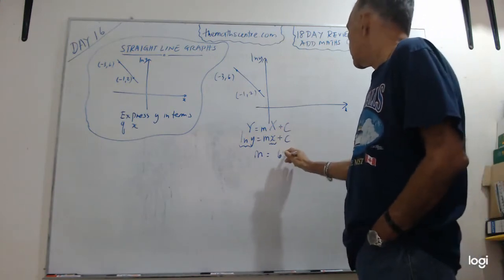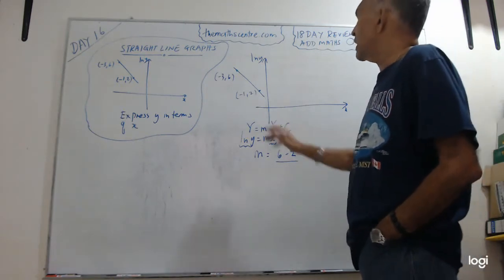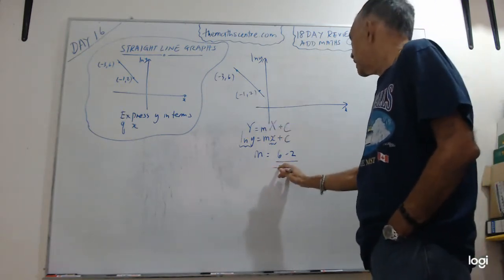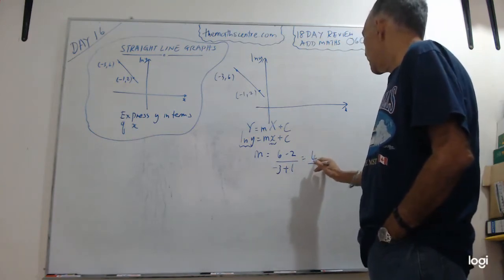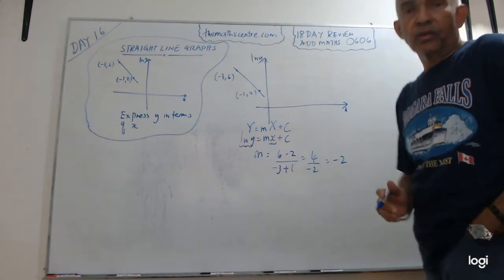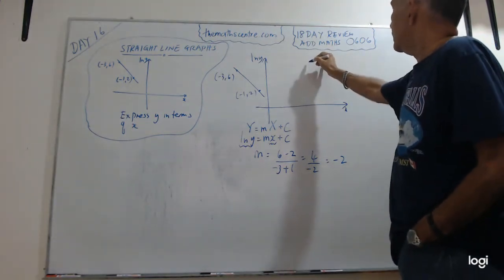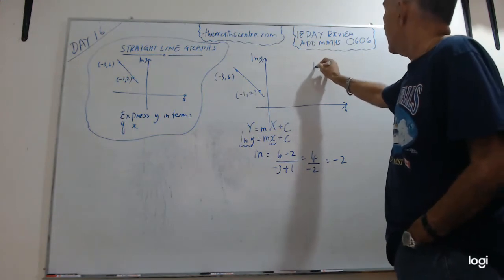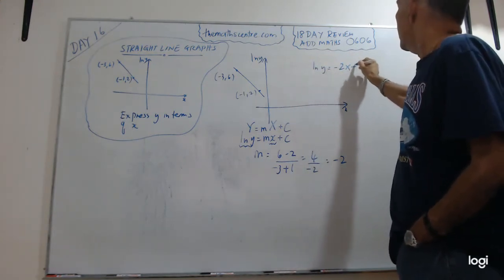M will be what? Y2 minus Y1 and X2 minus X1. 6 minus 2 over minus 3 minus, let me write it here, minus 3 minus minus 1. Okay? You will get 4 over minus 2. That looks good. So let me write it here. So I go ahead and bend down. I have a ln Y equals to what? Minus 2 X plus C.